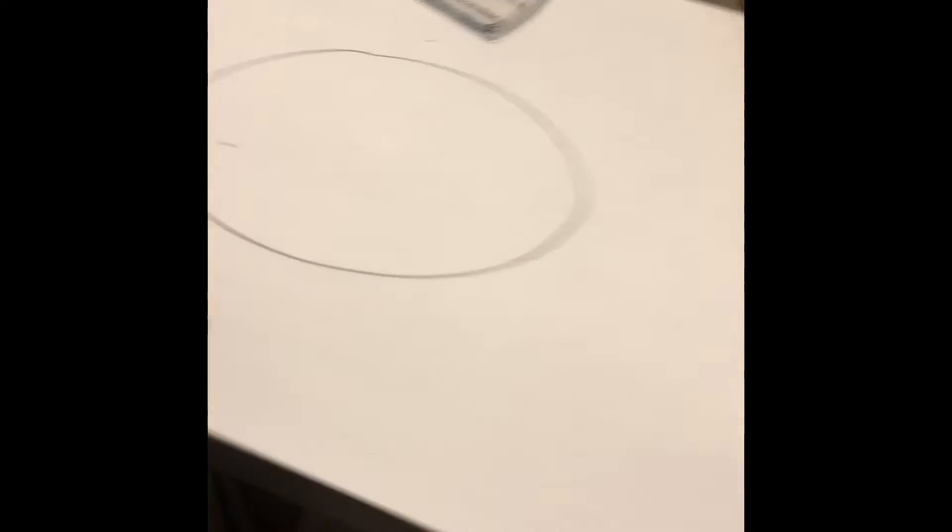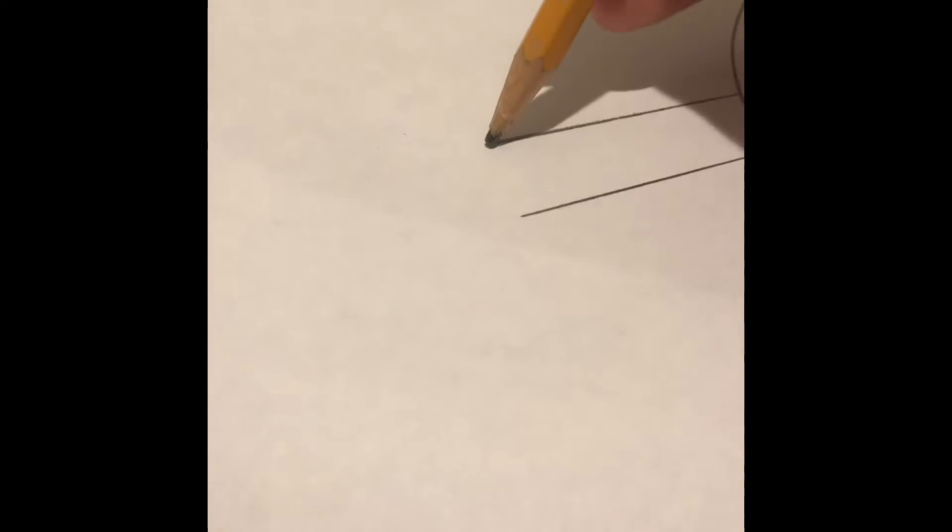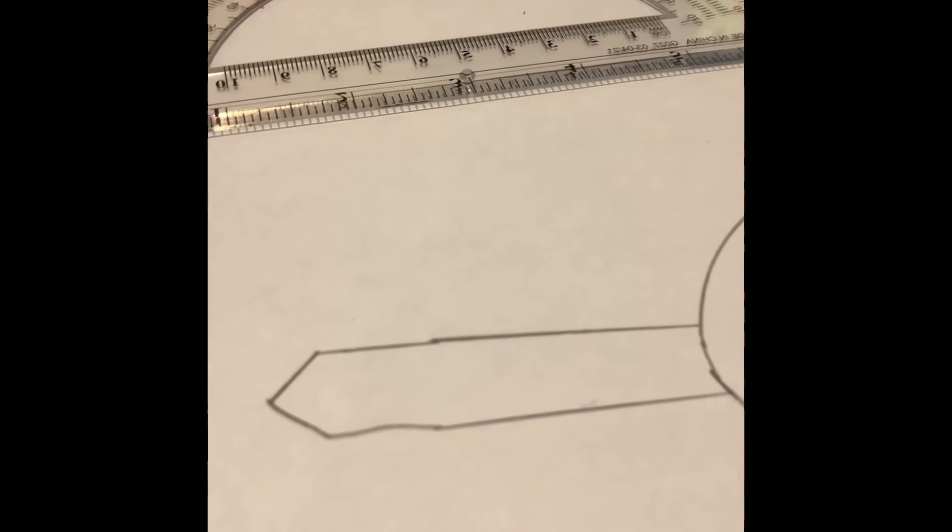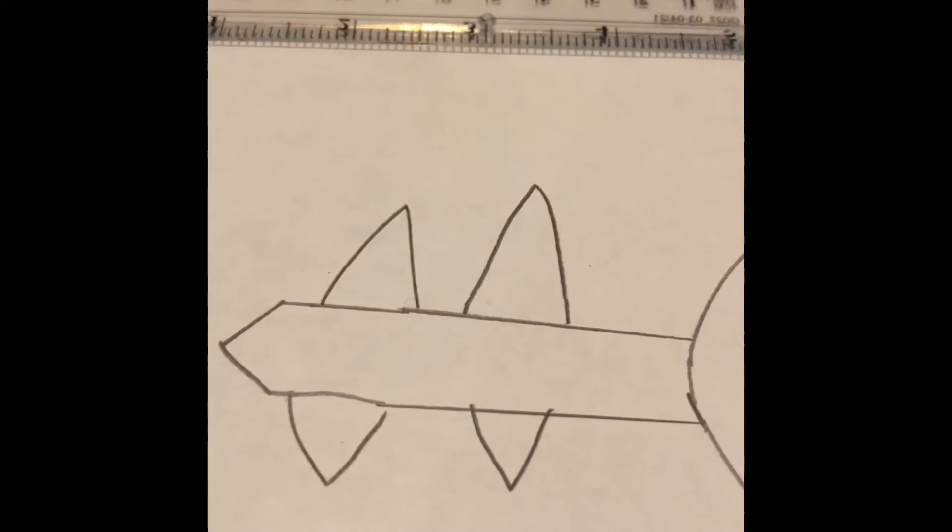So now what we're gonna do is we're gonna make the lines longer. What you're gonna want to do is just spike, a sword tip. So now you're gonna draw some smaller spike and then a bigger spike. We do the same thing for the next one, same exact process.